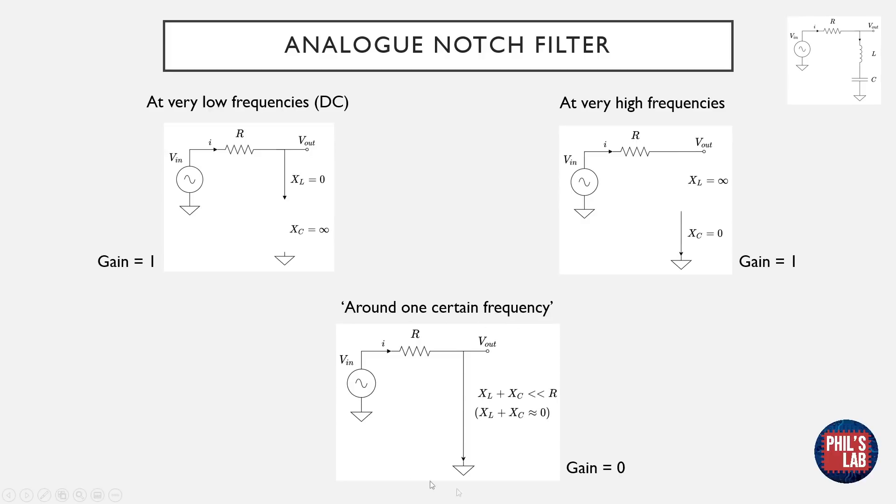However, around one certain frequency, the series combination of reactances of the inductor and capacitor will be much smaller than the resistance of the resistor, and pretty much close to 0. This happens at resonance, i.e. when the reactances cancel each other out. Here the output is essentially shunted to ground, and we get a filter gain of 0. None of the input voltage passes to the output.